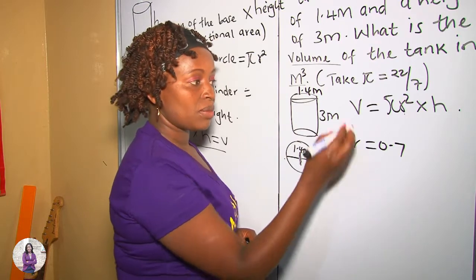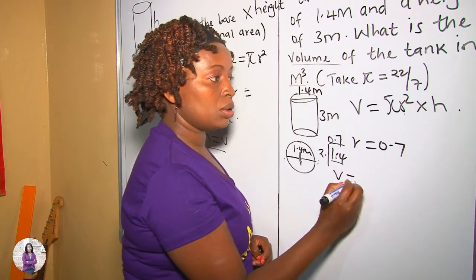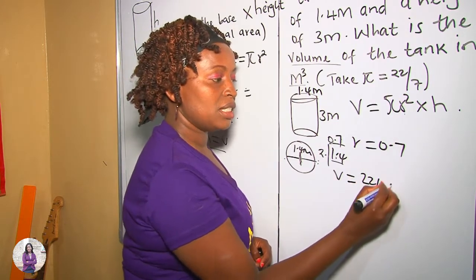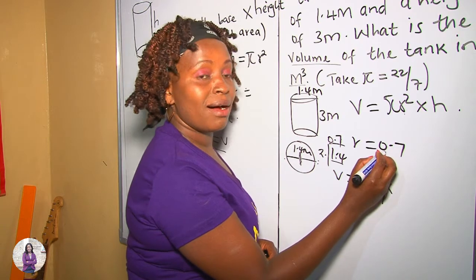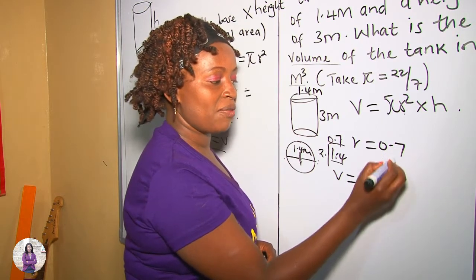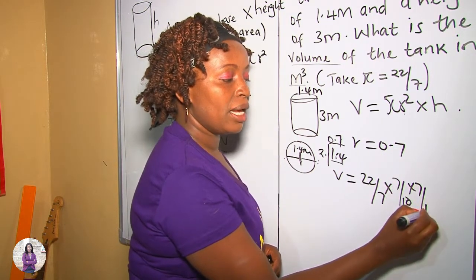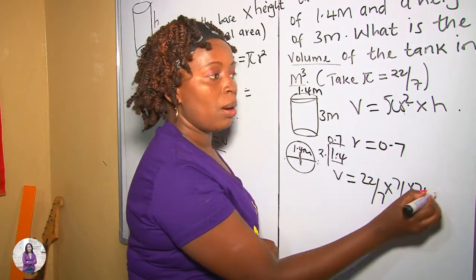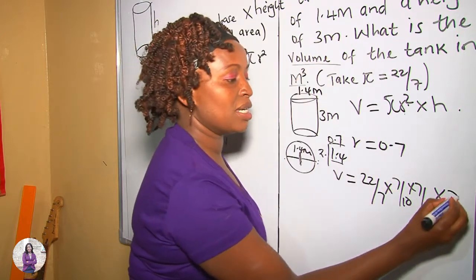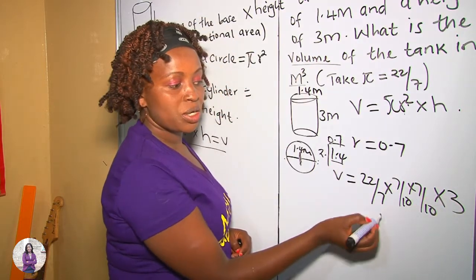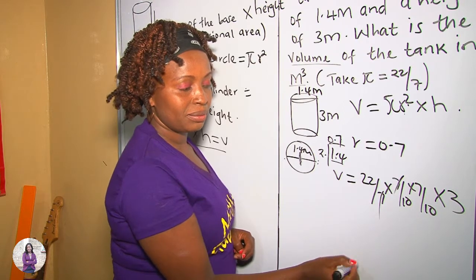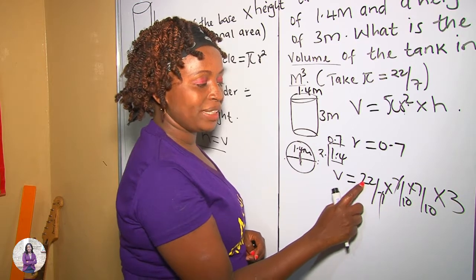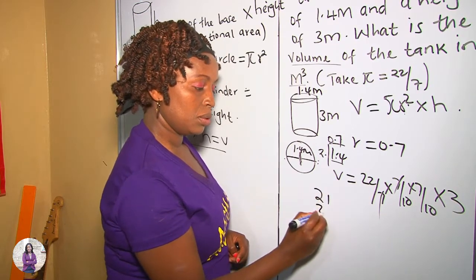Now let's work out the whole question. Volume is equal to pi — in this case we use 22 over 7 — times our r, which is 0.7, written as a fraction 7 over 10, times 7 over 10 because we are squaring the radius, multiplied by the height, which is 3 meters. Now, we cross-multiply: 7 times 3 is 21, and 21 times 22 gives us 462.